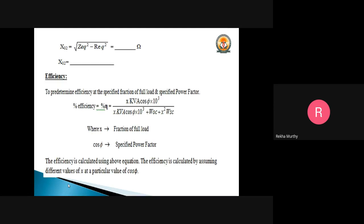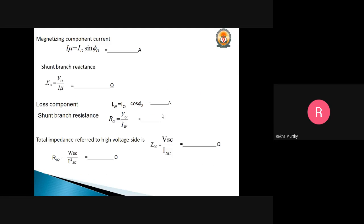The efficiency formula is: η = (X × kVA × cos φ × 10³) / (X × kVA × 10³ + WOC + X² × WSC), where WOC is the open circuit wattmeter reading and WSC is the copper loss of each transformer. We also calculate the components of the no-load current: the magnetizing component Iμ = I0 × sin φ0, and the loss component IW = I0 × cos φ0.